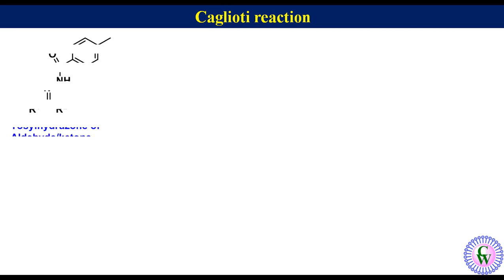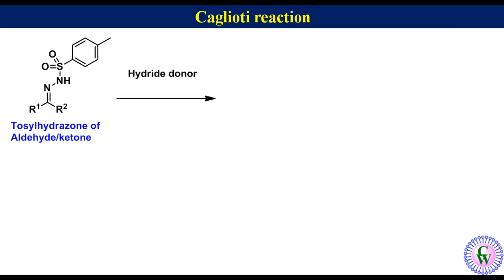Hello friends, the topic of today's discussion is the Caglioti reaction. In this reaction, tosylhydrazone of aldehyde or ketone reacts with hydride donors like sodium borohydride or lithium aluminum hydride to produce the corresponding alkane.